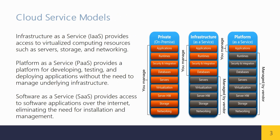Cloud Service Models. Infrastructure as a Service (IaaS) provides access to virtualized computing resources such as servers, storage, and networking. Platform as a Service (PaaS) provides a platform for developing, testing, and deploying applications without the need to manage underlying infrastructure. Software as a Service (SaaS) provides access to software applications over the internet, eliminating the need for installation and management.